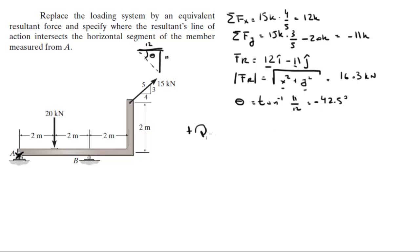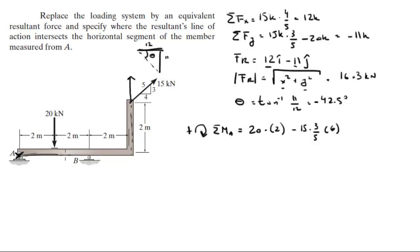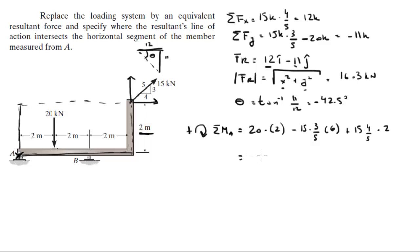Assuming clockwise is positive, the sum of the moments at A is given by 20 times 2, minus 15 times 3/5 times 6 — that component turns the lever arm to a length of 6 — plus 15 times 4/5 times 2, because that force turns the lever arm to a length of 2 meters. Once you calculate it, the sum of the moment at A equals exactly 10 kN·m.